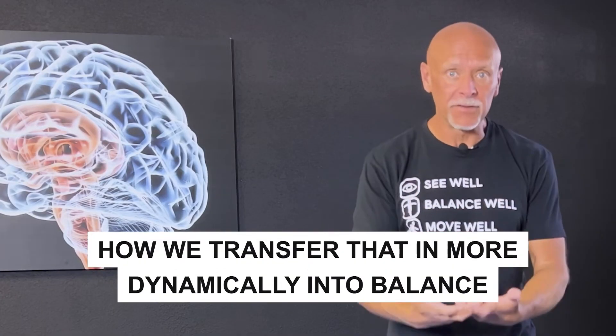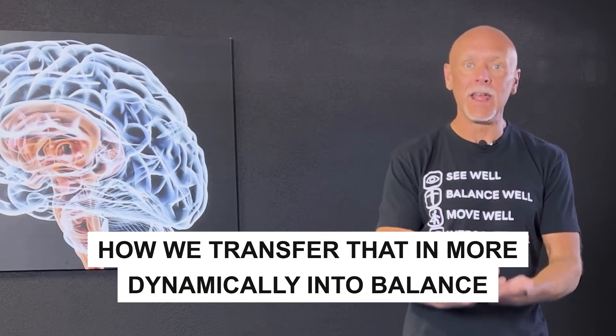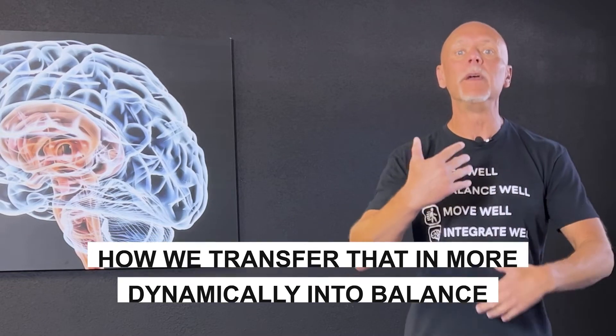Now, how we transfer that more dynamically into balance is we want to make sure that we're making the stance more challenging. So in the beginning, if someone's really compromised, they're going to hold onto the wall, hold onto a chair, have a nice wide base. Their knees are going to be bent and they're just going to be doing their eye work.